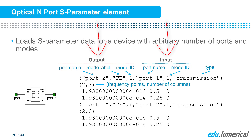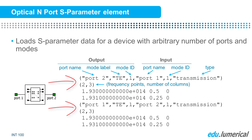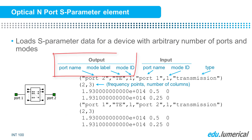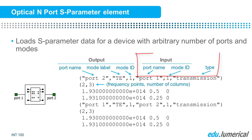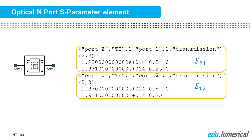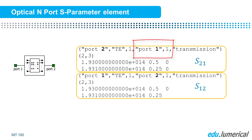For each input and output mode combination, there is a block of data. The data is prefixed by a header which contains the output port name, mode label, and mode ID of the output mode, followed by the input port name, mode ID of the input mode, and the type, which is transmission in this case. The type can be modulation if the data includes temperature dependence. For the first header, we see that the output is port 2, mode 1, and the input is port 1, mode 1, so the data that follows will be for the S21 element of the S matrix.